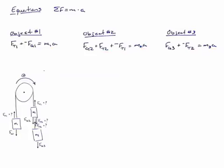Let's look first at object number 1. If I'm trying to isolate FT1 to make that substitution, it'll give me an equation that looks like this. All I do is add FG1 to both sides.